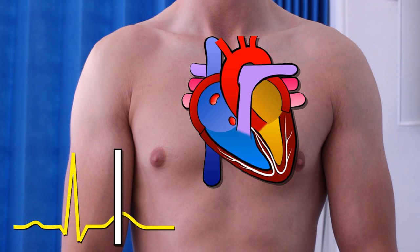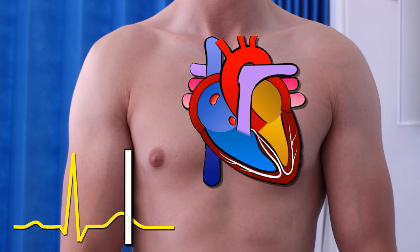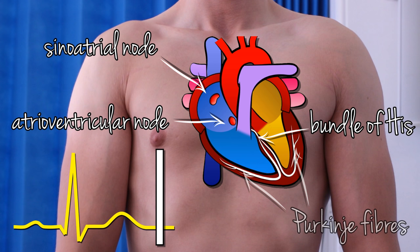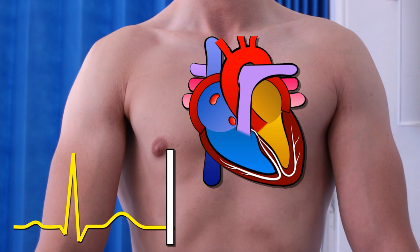In a healthy heart, contraction is triggered by a wave of depolarisation that spreads across the myocardium. The impulse is generated by the sinoatrial node and spreads across the atria, moving cell to cell. It's then transmitted to the ventricles by the atrioventricular node, or AVN. It then runs down the bundle of His and up the Purkinje fibres, causing contraction as it goes. This impulse allows the heart to beat in a synchronised fashion — atria first, then ventricles.